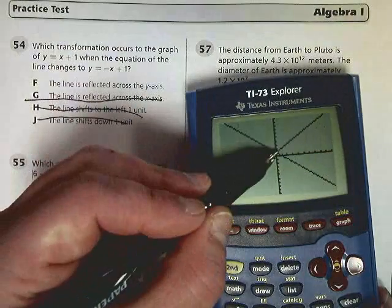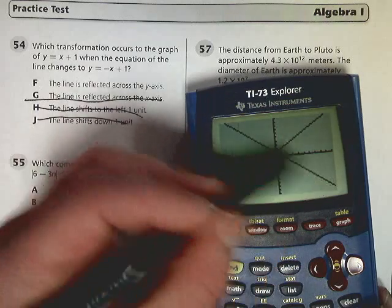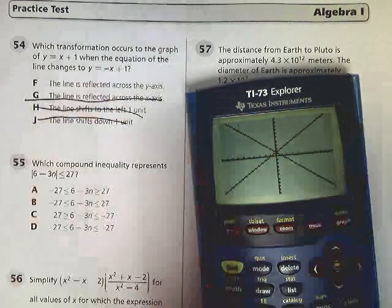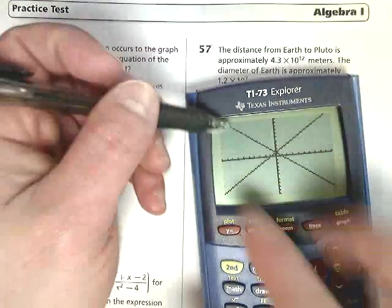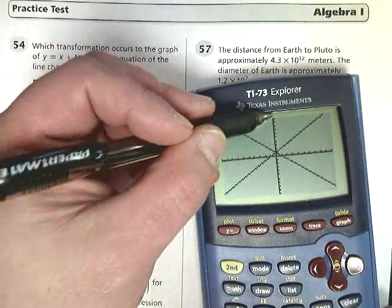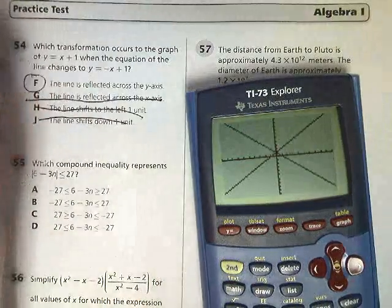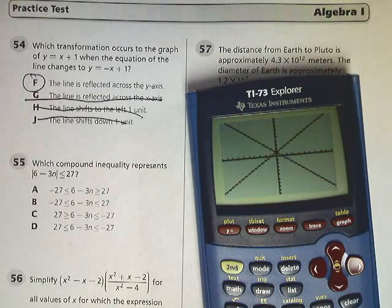If I made a reflection of this across the y-axis, however, if I folded it over, I would get this to land exactly on top if I did it right over the y. So the answer to number 54 is F.